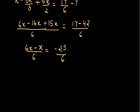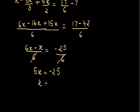I can cancel out 6 and 6. So 6x minus x, that is 5x, is equal to minus 25. To get the value of x, I can divide 5 on both the sides. So the value of x is minus 25 upon 5, that is equal to minus 5.